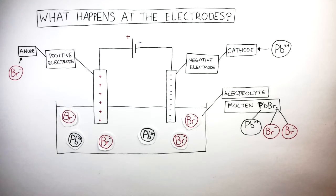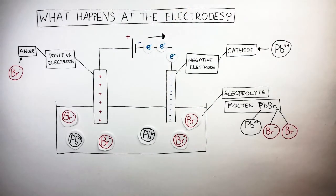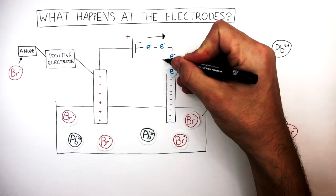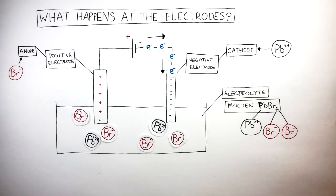The hot molten electrolyte contains negative bromide anions and positive lead cations which are now free to move. Now what happens is the electrons flow out of the negative terminal of the cell or power pack. They flow in one direction towards the negative electrode, the cathode. Whilst the electrons are moving in the metal wire, the ions are free to move in the electrolyte as there are no ionic bonds holding them together.